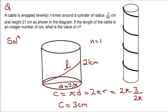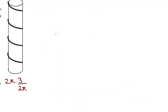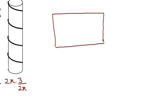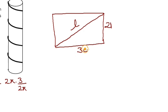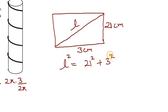If you unfold this cylinder — imagine it's a paper folded into a cylindrical form — when you unfold it, it looks like a rectangle. The wire becomes the hypotenuse. The height is 21 and the width is the circumference, which is 3 centimeters. By the Pythagorean theorem: l² = 21² + 3².